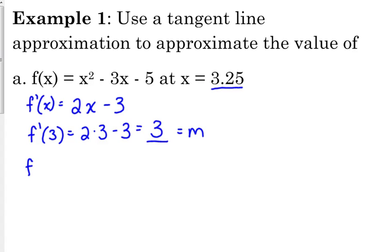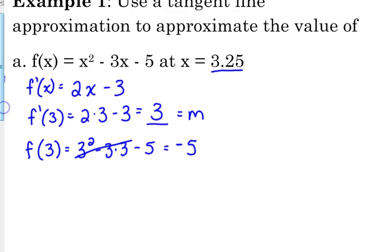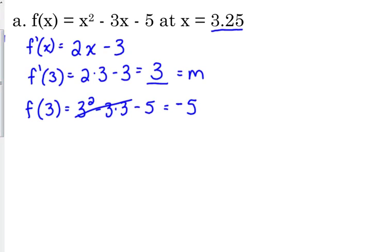So we need a point. So we need f of 3. So we need to go back to the original. 3 squared minus 3 times 3 minus 5. Well, that's nice. 3 squared minus 3 times 3. Those are the same thing. So 3 negative 5 is our point. So our tangent line is y plus 5 is equal to 3 times x minus 3.